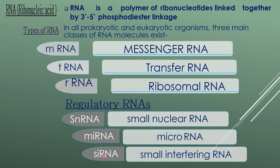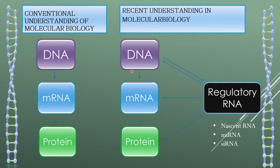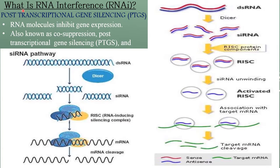siRNA is also called small interfering RNA. According to the conventional understanding of molecular biology, DNA synthesizes mRNA, and from mRNA protein is synthesized. But the recent understanding in molecular biology suggests that regulatory proteins affect DNA synthesis, mRNA synthesis, and protein synthesis. DNA synthesis also affects the regulatory RNA synthesis. Usually, the regulatory RNAs are nascent RNA, microRNA, and siRNA.